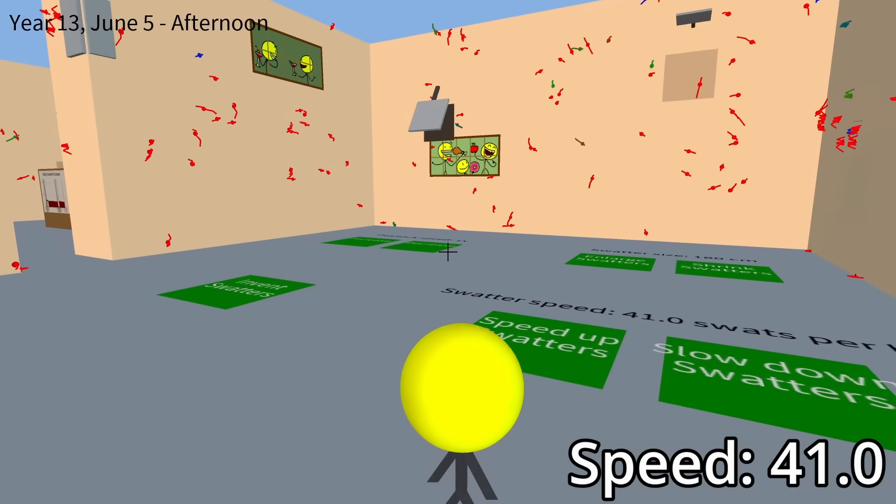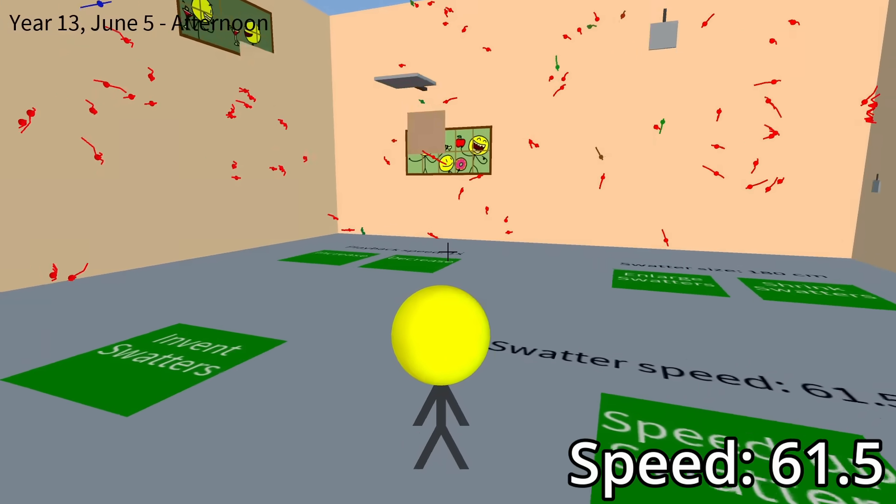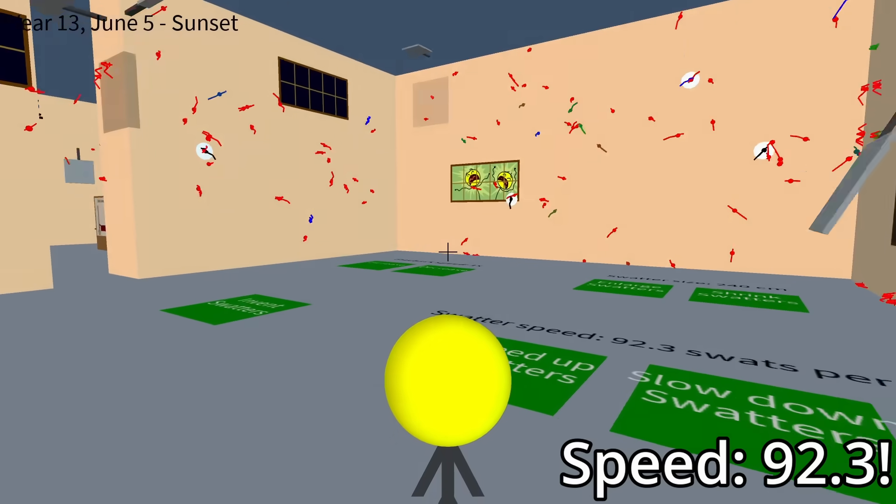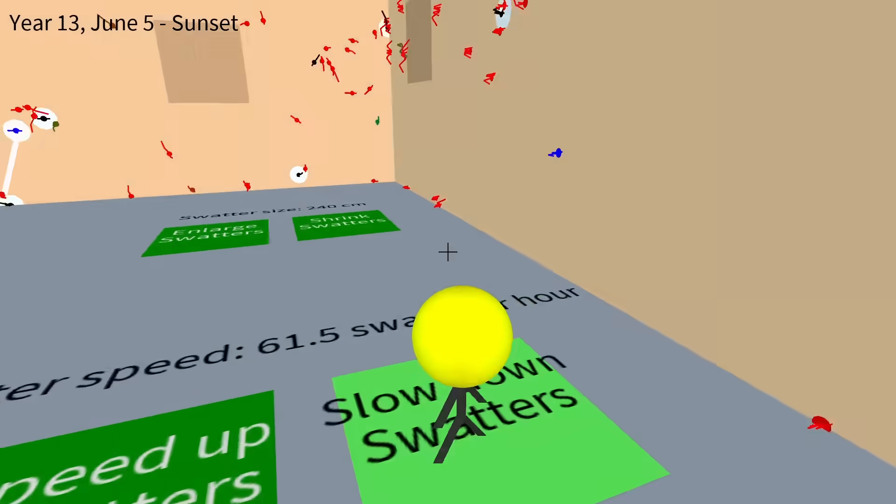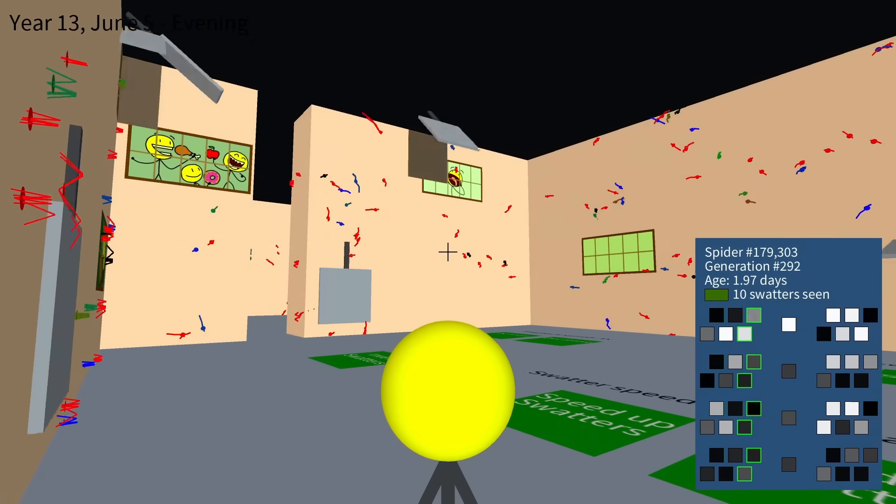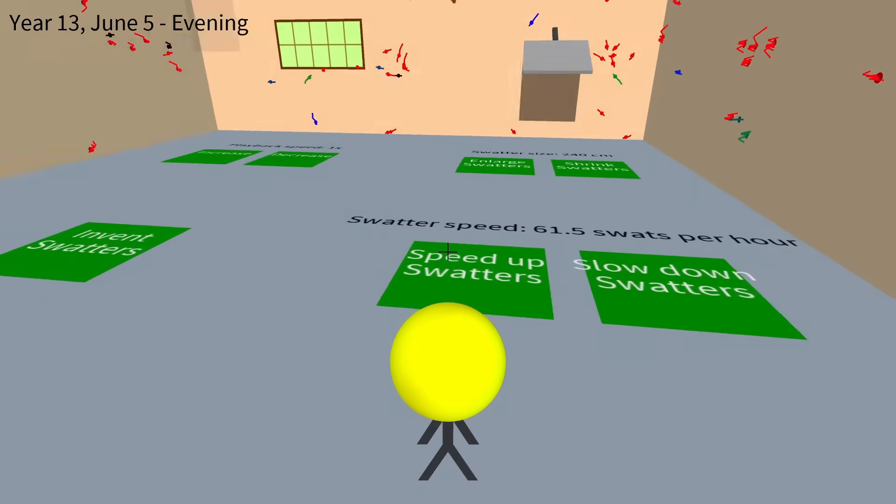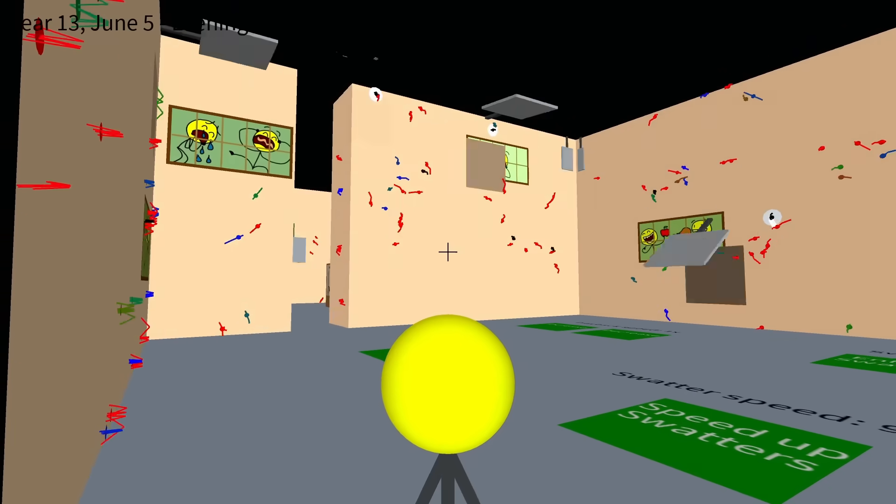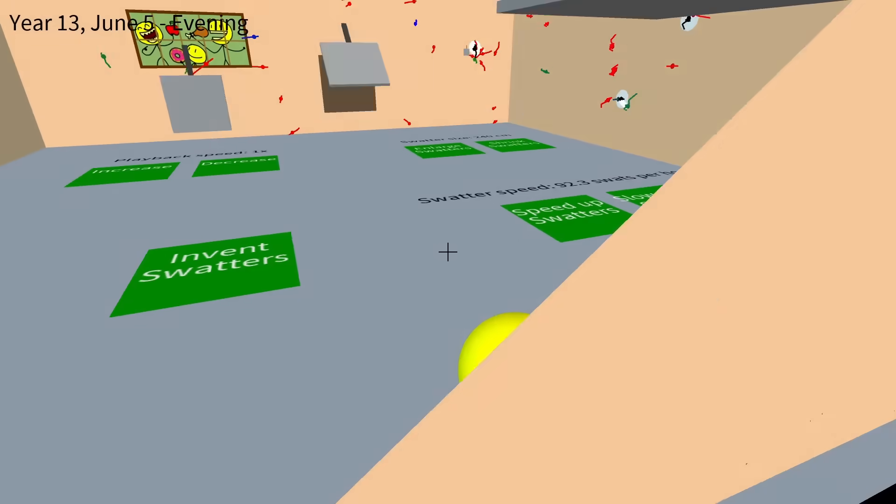41. 61. 92. Now they're getting deaths. See, at 61 there weren't that many deaths. You only hear a few spider splats in the sound effects, right? But at 91, the liquidy spider splats are everywhere.